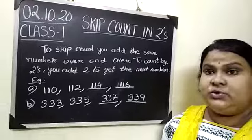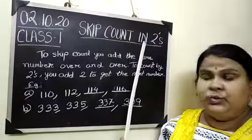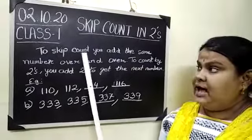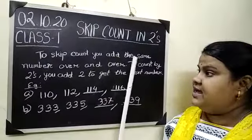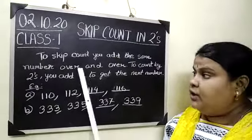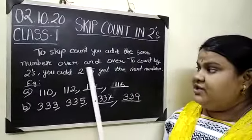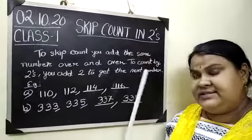In Maths, we are going to do skip counting in 2's. What is skip counting in 2's? To skip count, you add the same number over and over. To count by 2's, you add 2 to get the next number.